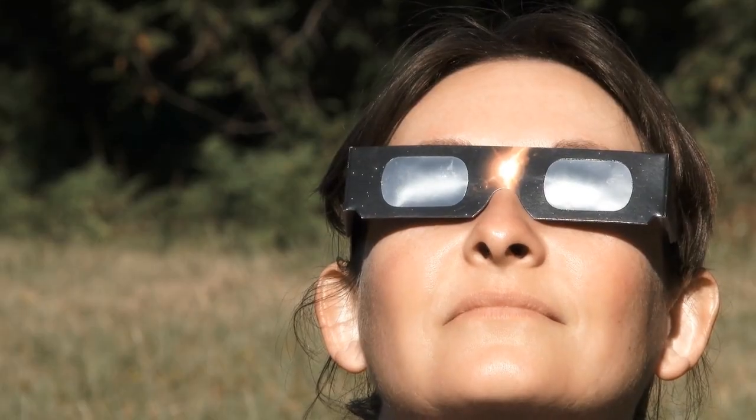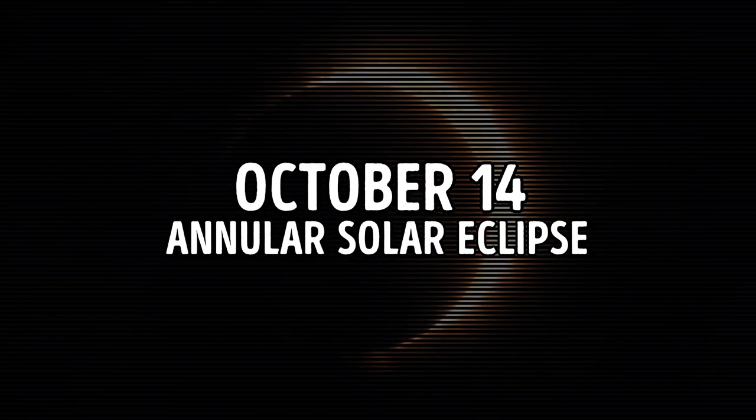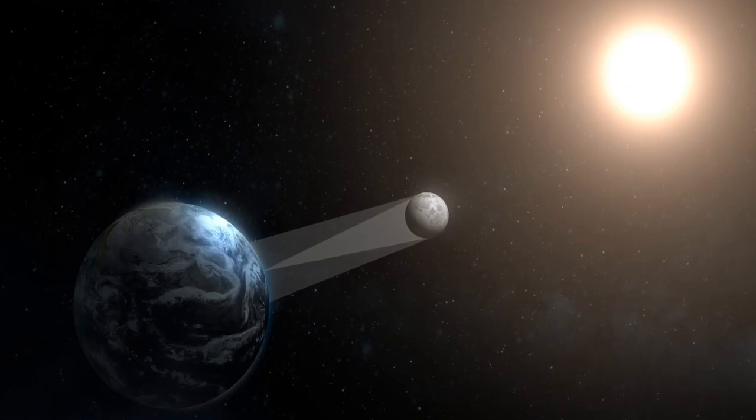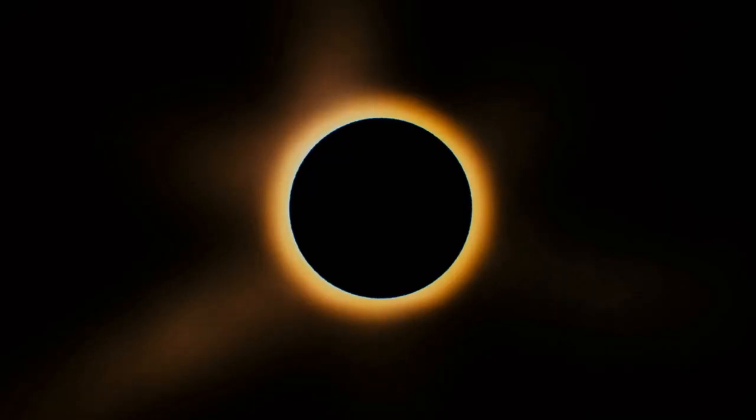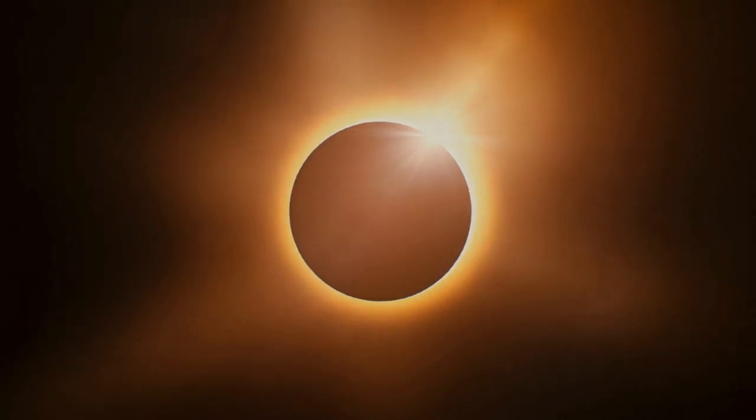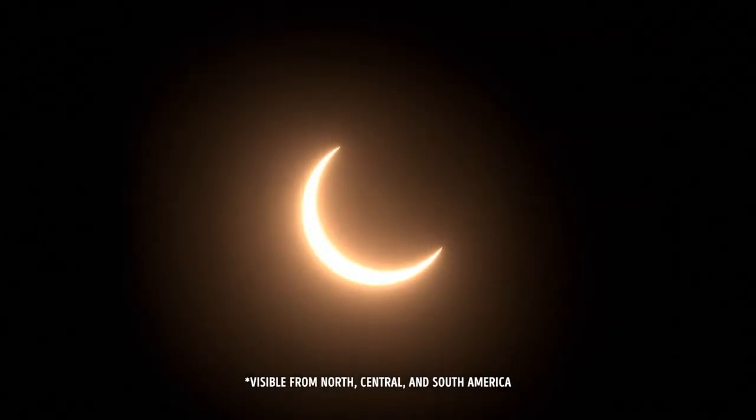On October 14th, people in the southwestern USA will be able to enjoy an annular solar eclipse. Solar eclipses happen when the moon passes between Earth and the sun. But this year, the moon won't cover the sun completely. That's why a dazzling glowing circle around the moon will be visible from certain places. This eclipse will be quite short. It'll last for around 5 minutes.